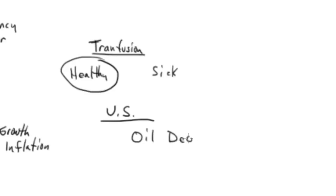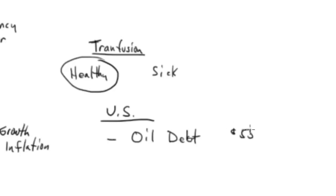One can be the oil debt — massive bankruptcies that finally tip things over. And we're not just talking about US frackers, but also the Canadian oil sands companies. We have $550 billion dollars of high-risk debt that was issued over the last 10 years to support this industry that is now failing.